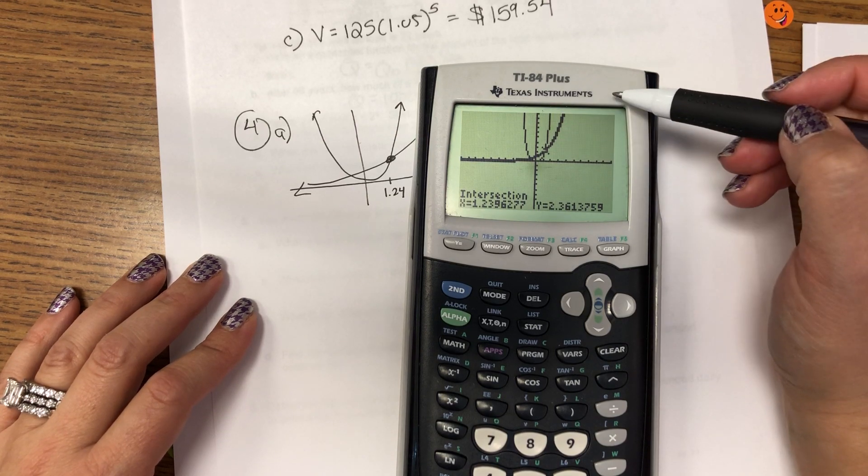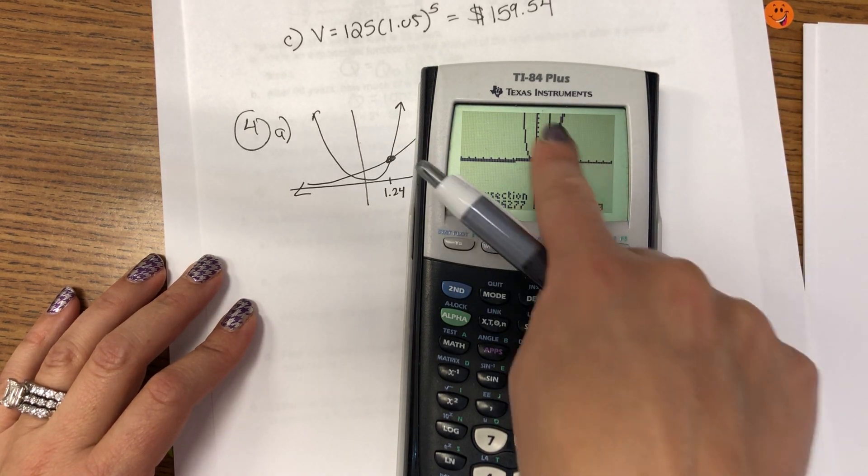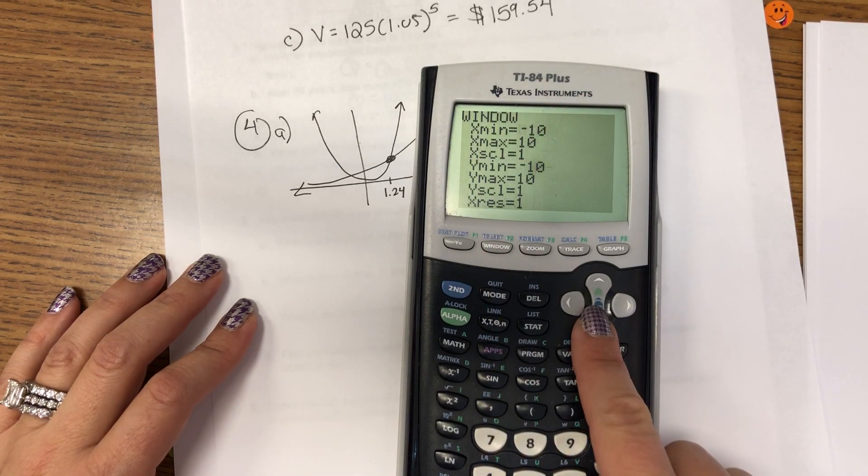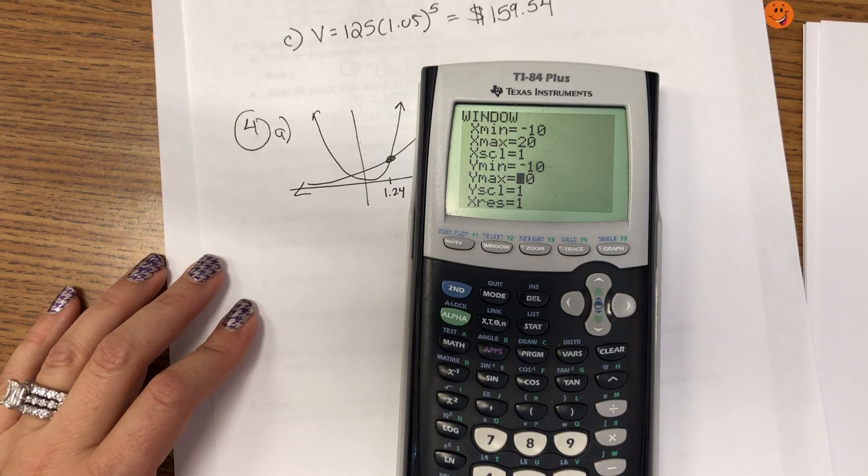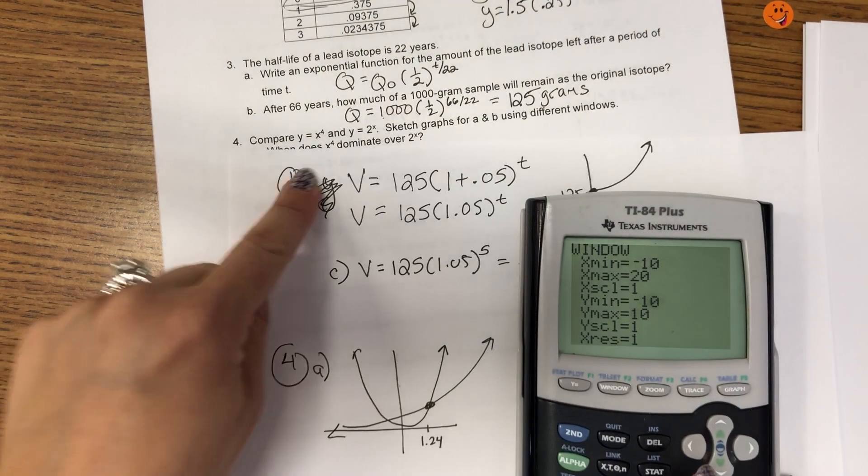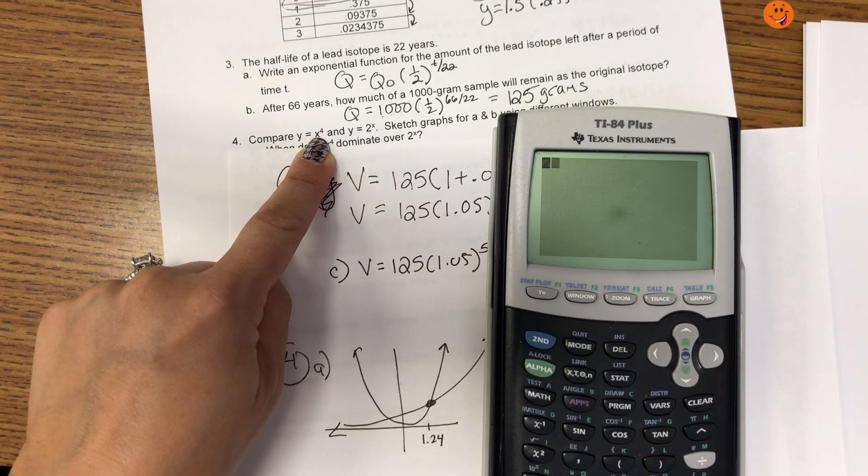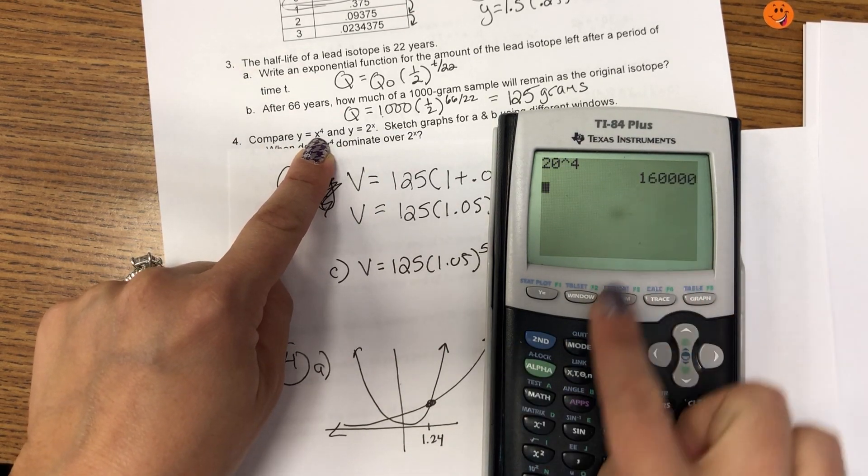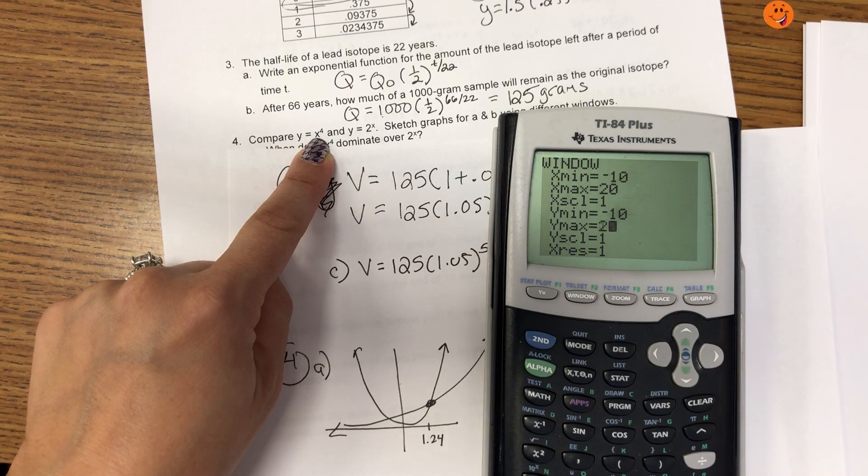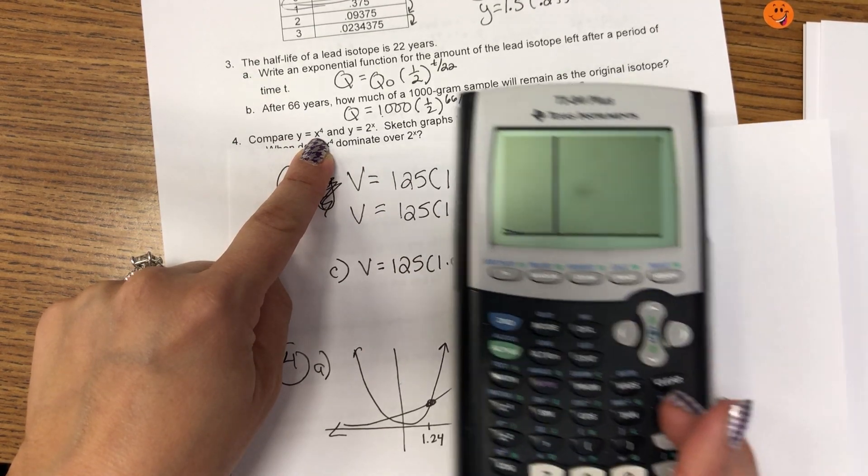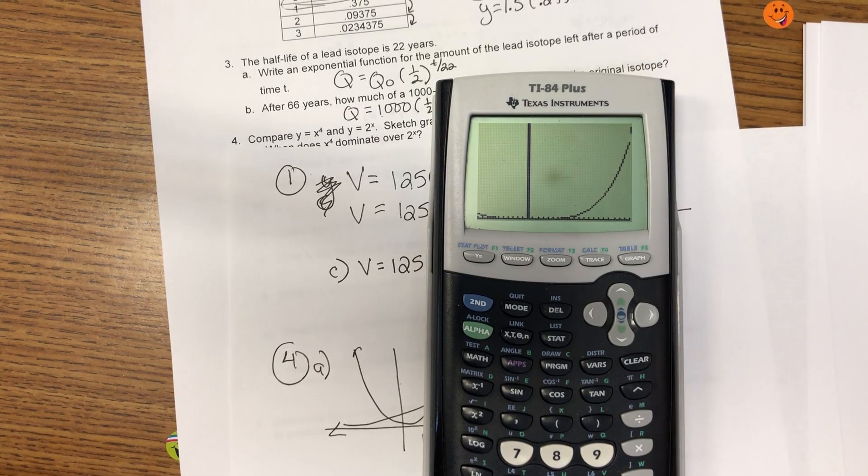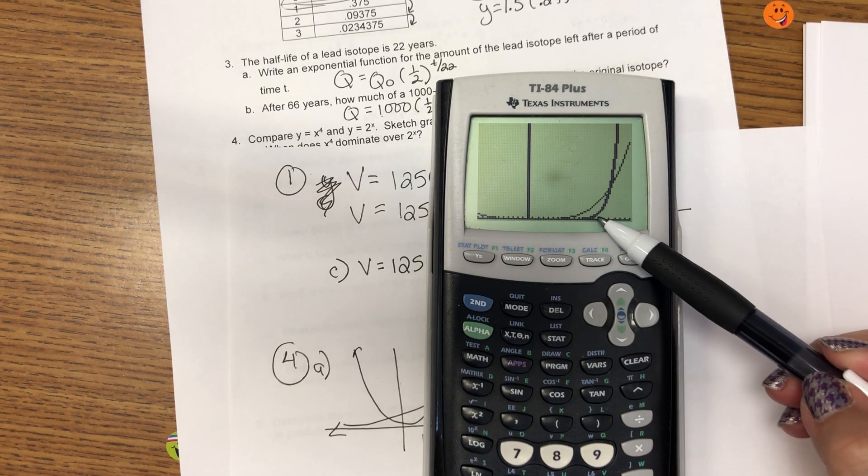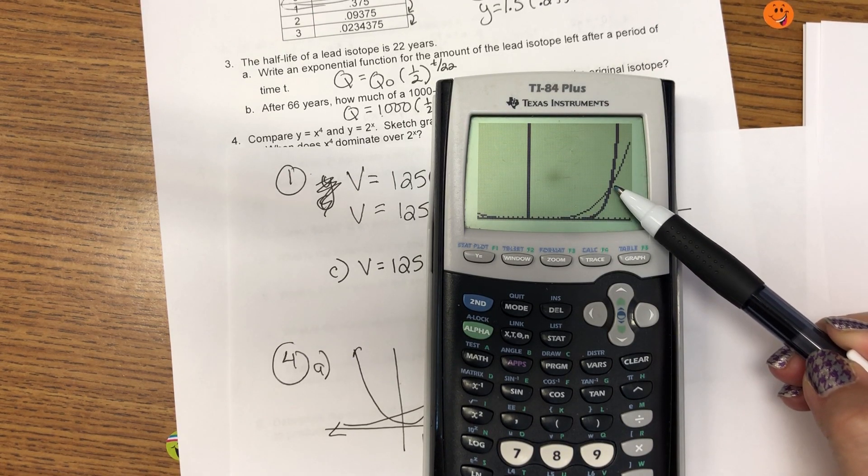Well, at this point, the X to the fourth, the power function, is higher. So, I know that's going to have to change again. So, I'm going to change my window and look further out in the X. So, let's go to 20. Since my function's X to the fourth, let's see, 20 to the fourth is 160,000. So, I'm going to make my Y max 200,000.